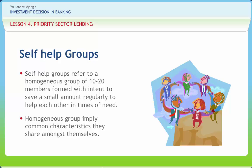The group should be in existence for at least a period of 6 months, should have undertaken savings and credits from its own resources, and should be maintaining proper accounts or records, meeting registers, etc. An NGO which promoted the SHG can approach the bank for advance for onward lending to the SHG. Such NGO should have a good track record, be in existence for at least 3 years, and have audited balance sheets. SHGs would not be in a position to offer any security other than the group savings; as such, the advance may be treated as clean or unsecured advance.